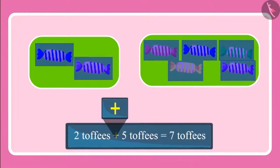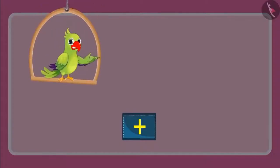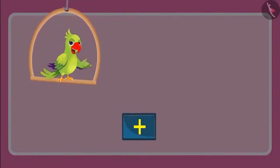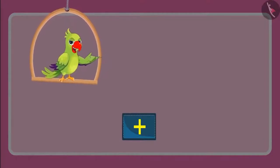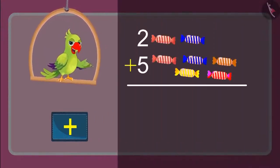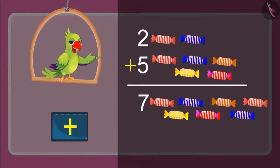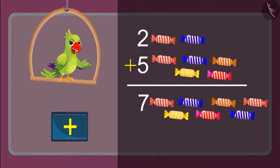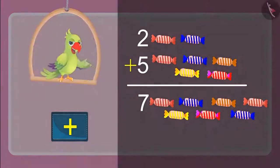Children, do you know what symbol this is? Yes, this is the symbol of addition. We can write it in one more way. When we added five toffees to two toffees, we got seven toffees. You also got the same answer, right? Excellent!